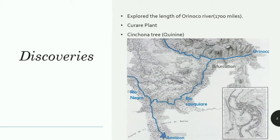Now let's talk about his discoveries. He explored the length of the Orinoco River, which was 1,700 miles, and made fantastic new discoveries along the way. For example, he was the first explorer to witness the preparation of the curare plant by Red Indians for a poisoned arrow. He also recognized the cinchona tree — whose byproduct quinine is a cure for malaria.